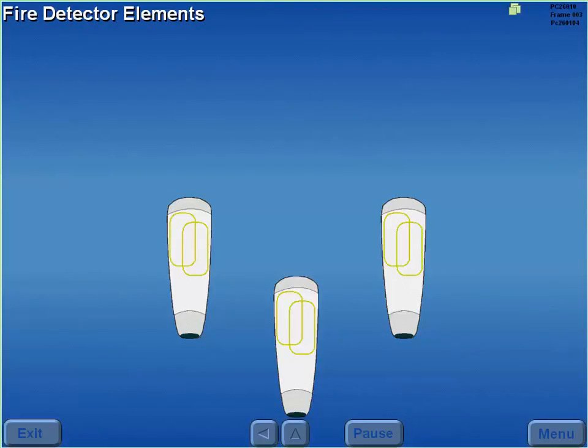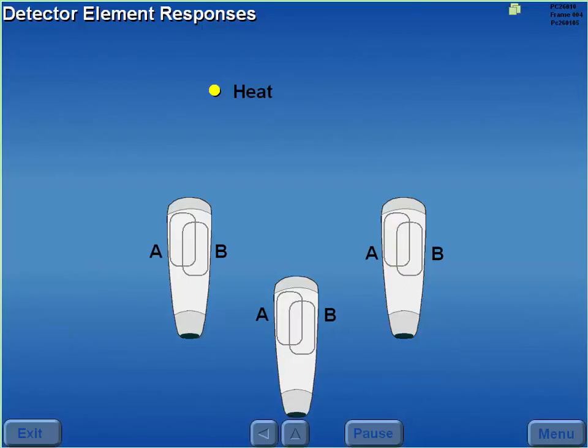Engine fire detection is sensed by two separate, continuous loop detector elements, which surround each engine. The elements, labeled A and B, respond to heat, a test, or mechanical damage.